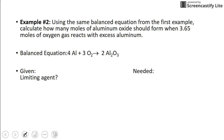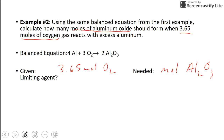Using the same equation, we're given 3.65 moles of oxygen, and we need to find how many moles of aluminum oxide. So we need moles of Al₂O₃. The question is: what is the limiting reagent? Well, if we have excess aluminum, that means we have a bunch of aluminum and not a lot of oxygen.